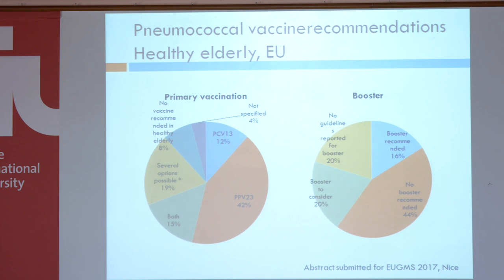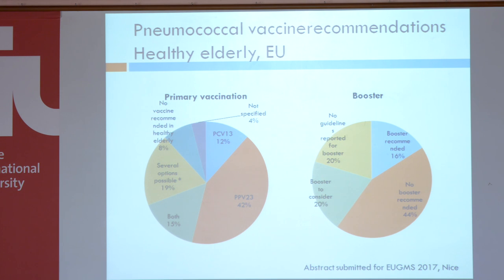How are vaccination recommendations implemented throughout Europe? This is an analysis of the situation in Europe we are performing at this moment, and you see that it differentiates a lot from country to country. 13% will recommend vaccination by the conjugate vaccine, 42% by the polysaccharide vaccine, and 15% both.